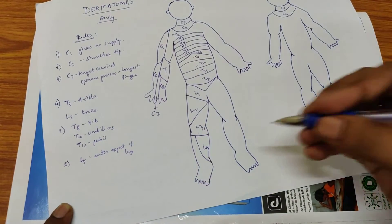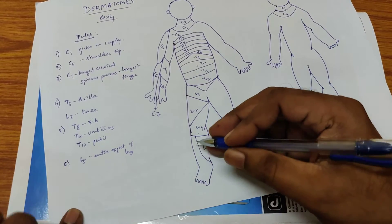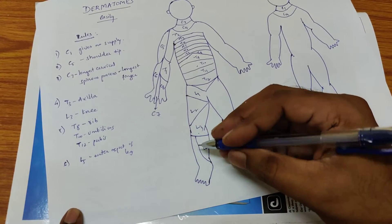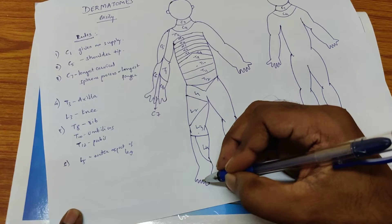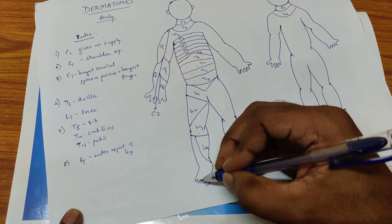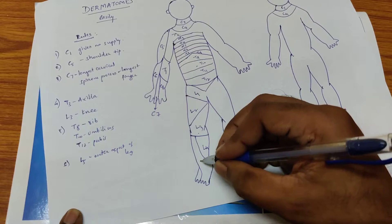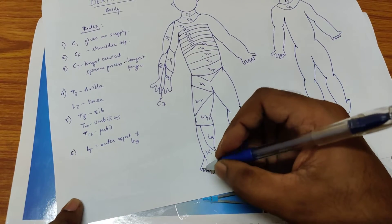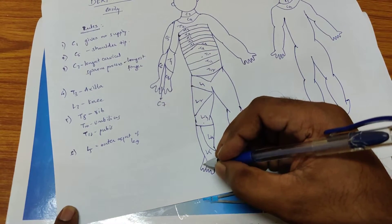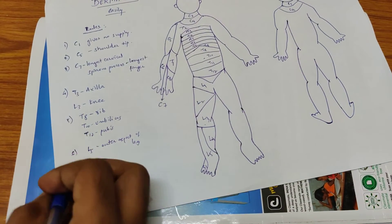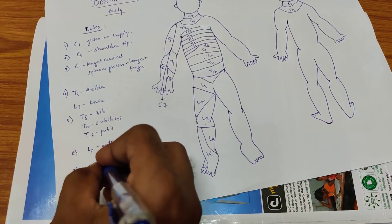The leftover portion looks like the number 5, so the next rule is L5 supplies the outer aspect of the leg and the first three toes — it looks like the number 5. So L5 supplies the outer aspect of the leg and the first three toes. The last rule is that the little toe is supplied by S1.